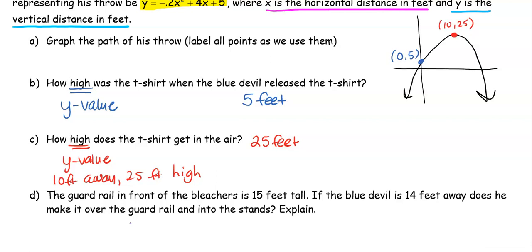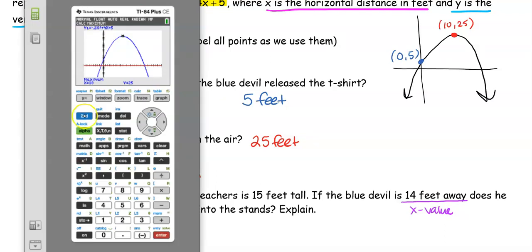We're trying to think about it - does it make it over the guard rail when he's 14 feet away? If he releases this t-shirt in this path when he's 14 feet away from the guard rail, is it going to go over? 14 is going to be our x value. So I want to find out how high is the t-shirt when it's 14 feet away.